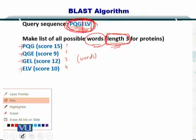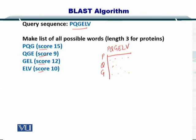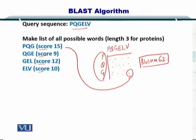Once you have obtained all the words from the sequence, you need to score them. You put one sequence versus one word and fill up the alignment matrix using the BLOSUM62 matrix — the block substitution matrix. You can obtain the score for each word one at a time. Here you have computed the score for PQG and put it here.